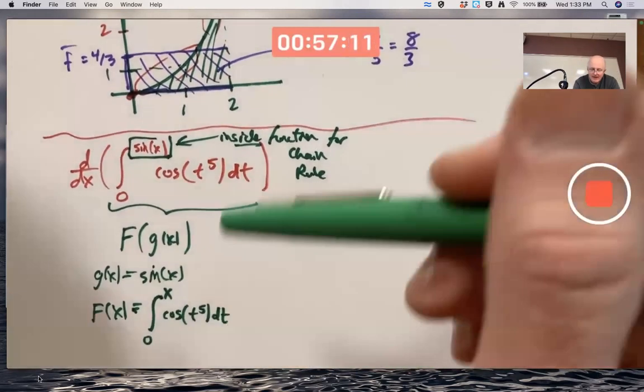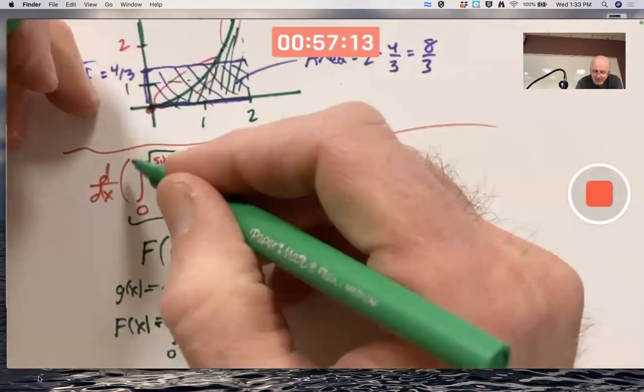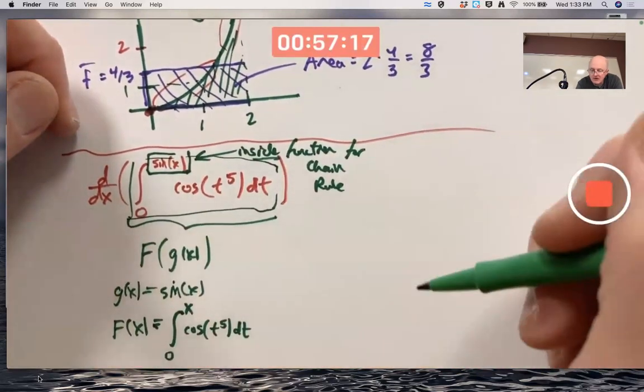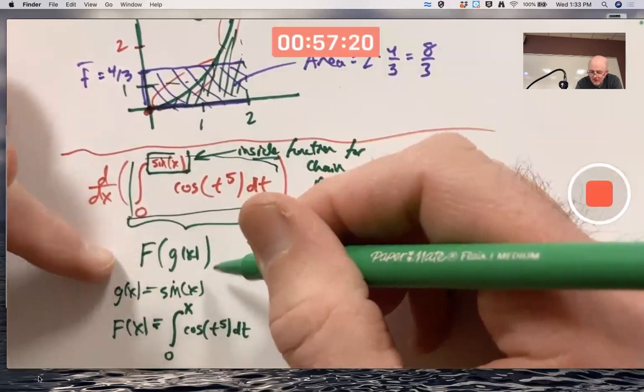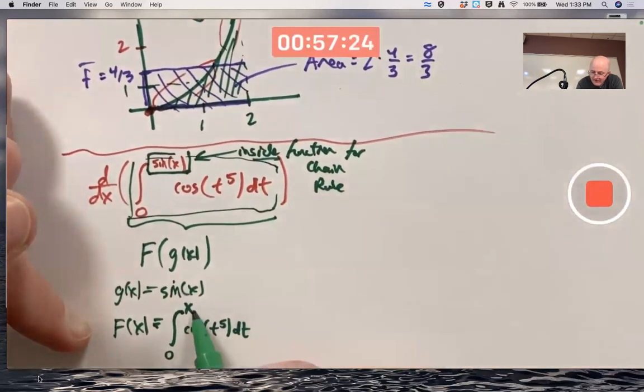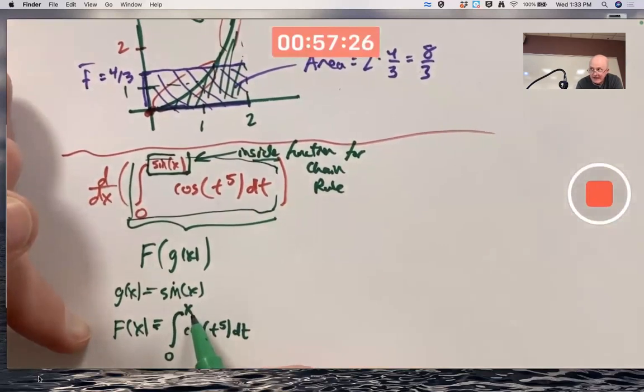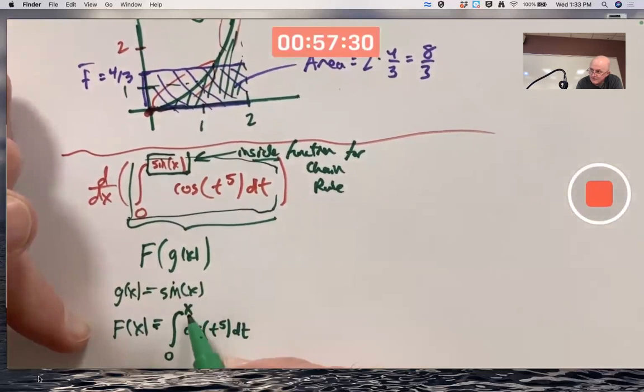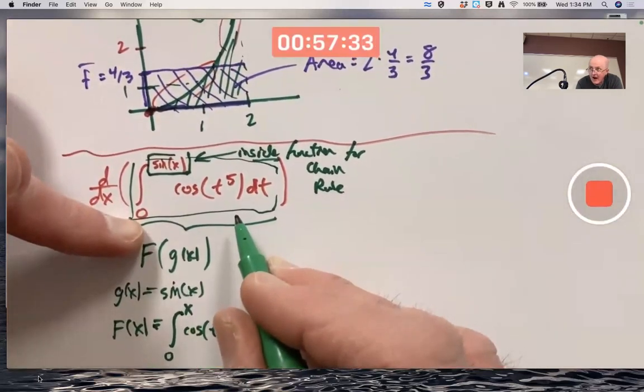Do you see how this works? This is key. This function inside the parentheses, not including the ddx symbol, is capital F of g of x, when g of x is sine of x and capital F of x is this integral, with that variable up there, just as a plain x. Because when you plug g of x into this function, you'd replace the x with sine x to get this. That's why.